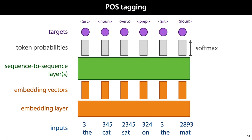If we apply a softmax activation over these vectors, we can interpret them as probabilities on the part-of-speech tags. Since we know the correct part-of-speech tags, we can compute the logarithmic loss, and this we can back-propagate to train the weights of our sequence-to-sequence layers and the contents of our embedding vectors.